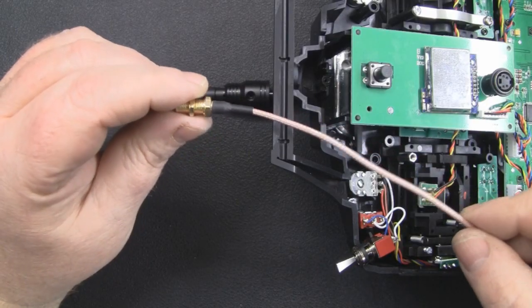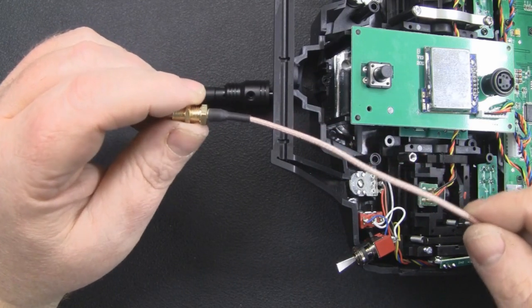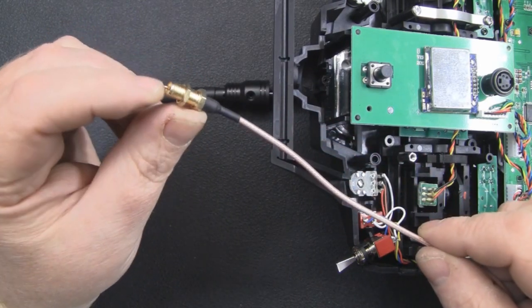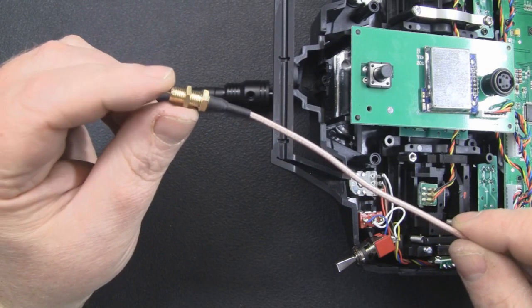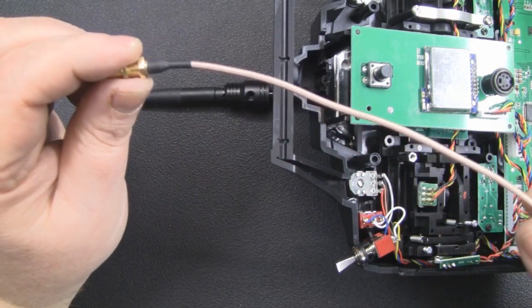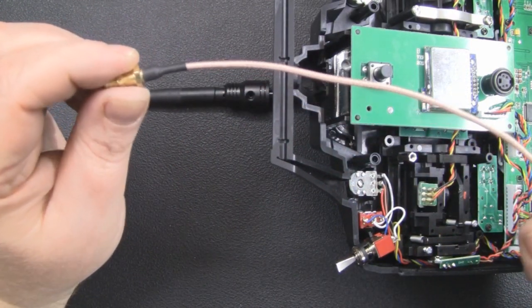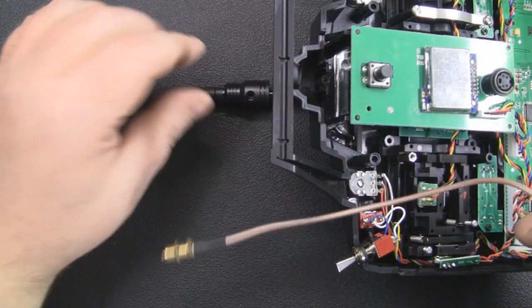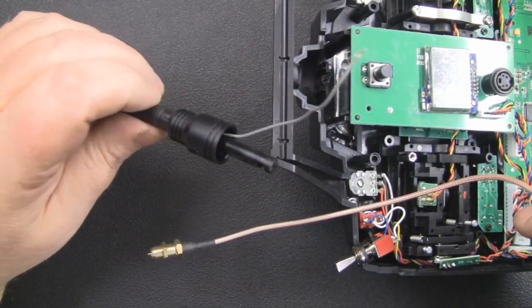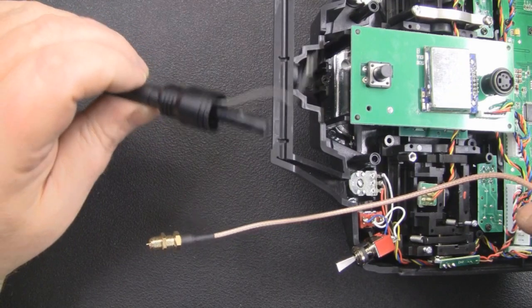What I'm going to actually upgrade to is one of these RPSMA bulkhead connectors, the female type with the center pin there. It's crimped onto some RG316 which is slightly thicker than the coax that was there before, but shouldn't have any problem soldering it in place.